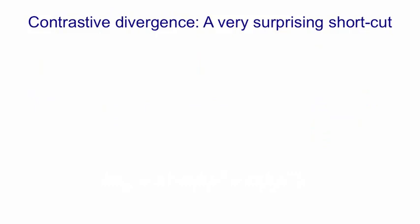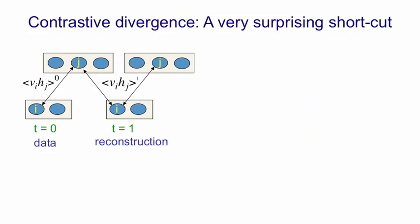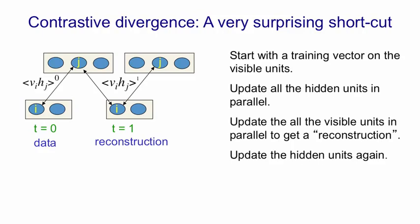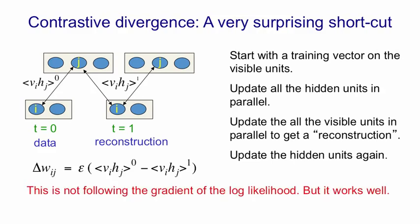Here's the very surprising shortcut: you just run the chain up, down, and up again. From the data you generate a hidden state, from that you generate a reconstruction, and from that you generate another hidden state. You measure the statistics once you've done that. Instead of using statistics measured at equilibrium, we're using statistics measured after doing one full update of the Markov chain. The learning rule is then the same as before, except it's much quicker to compute. This clearly is not doing maximum likelihood learning because the term we're using for the negative statistics is wrong, but the learning nevertheless works quite well.